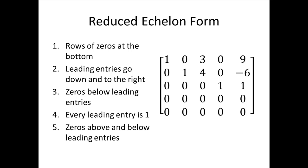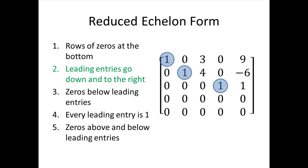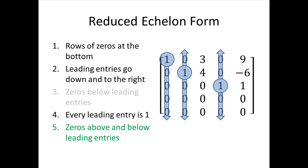Let's look at a matrix and verify it's in reduced echelon form. Rule 1: rows of zeros are at the bottom. Rule 2: leading entries go down and to the right. We skip checking rule 3 separately because rule 5 includes it — rule 5 requires zeros both above and below each leading entry. Rule 4: every leading entry is 1, which we can verify. Rule 5: checking above and below each leading entry confirms they are surrounded by zeros.